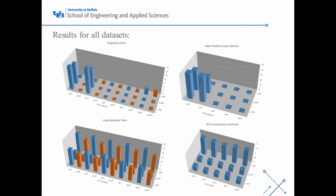We tested three different datasets with different values for mean matches. This parameter specifies the minimum number of inliers required for accepting a visual transformation. For mean matches of 10 and 15, two datasets experience false positive loop closures and high trajectory error. But our approach is able to create accurate maps, showing that our method is applicable in environments with sparse features.